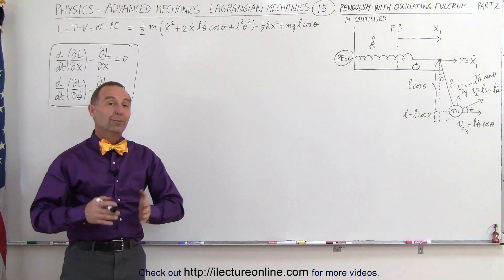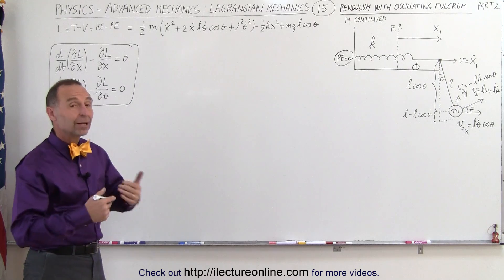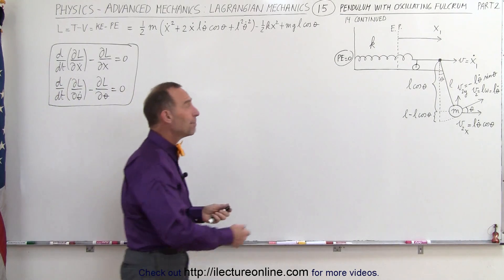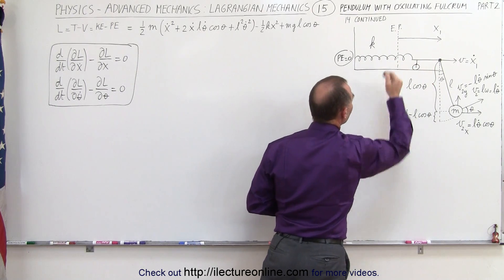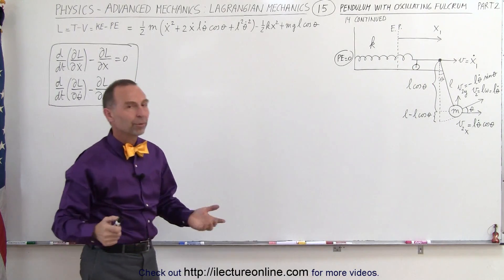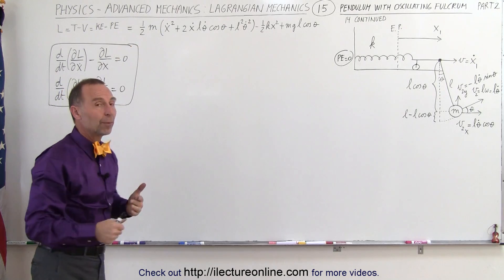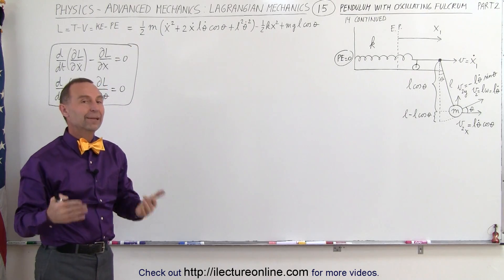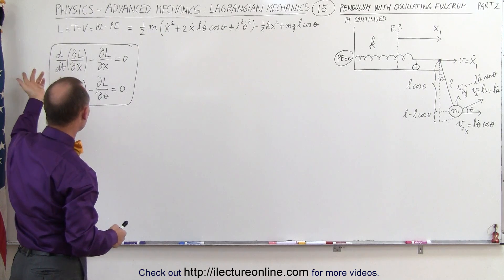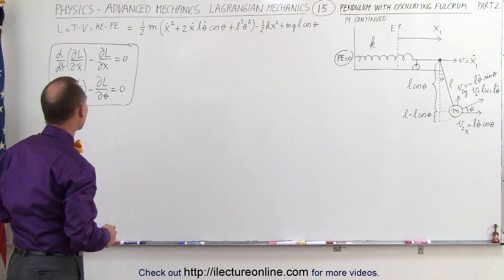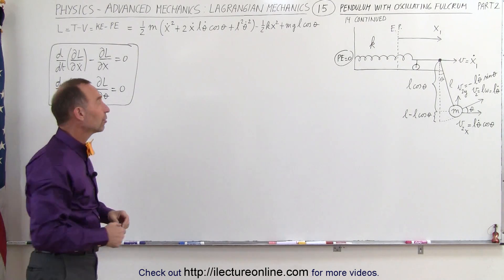Welcome to our lecture online. In the previous video we did the first part of this problem. We set up the Lagrangian for a pendulum attached to a fulcrum which oscillates back and forth attached to a spring using simple harmonic motion. Now that we have the Lagrangian, we're trying to come up with equations of kinematics, which can be obtained by using these two equations. We have two variables — x and theta — so we need a set of two equations.